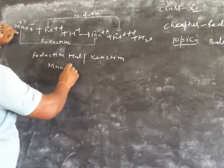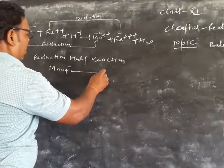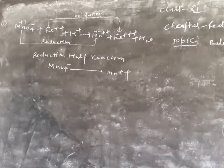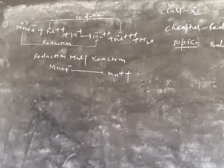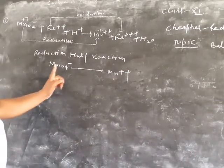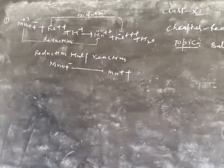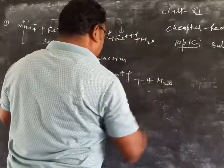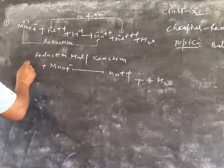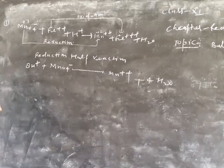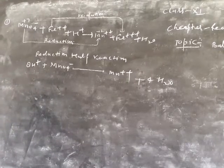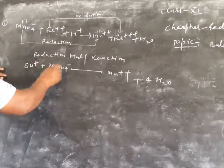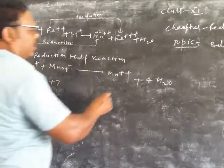MnO4- plus H+ gives Mn2+ plus H2O. First we balance the atoms of Mn - Mn is 1 on both sides. Then balance oxygen, add H2O. Then balance hydrogen, add H+.